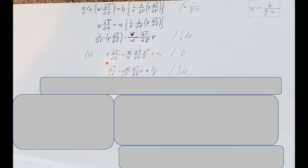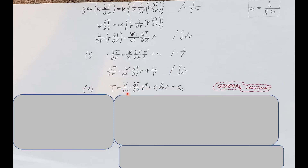Now the derivative of T with respect to r is all by itself, making it much easier to integrate a second time. Here is the equation we get after our second integral — I'll call this equation 2. This is the general solution of the differential equation we started with. But we have two unknowns, C₁ and C₂, so we need a particular solution, which means we need our boundary conditions.